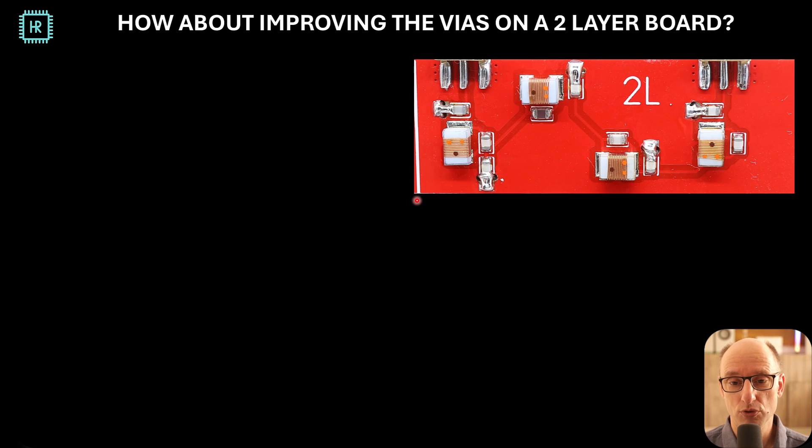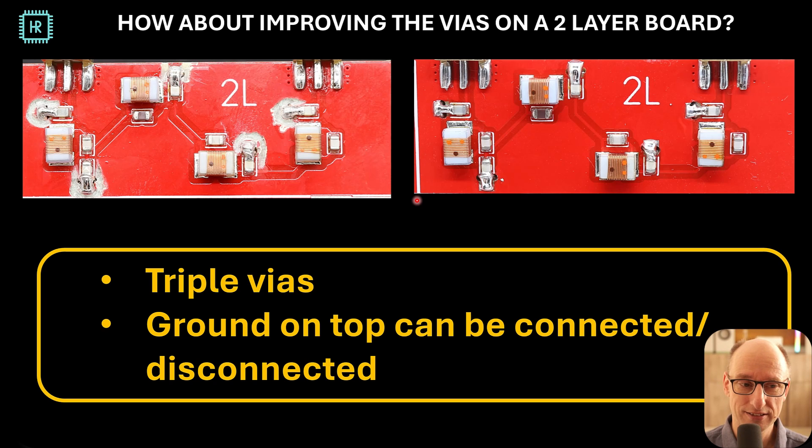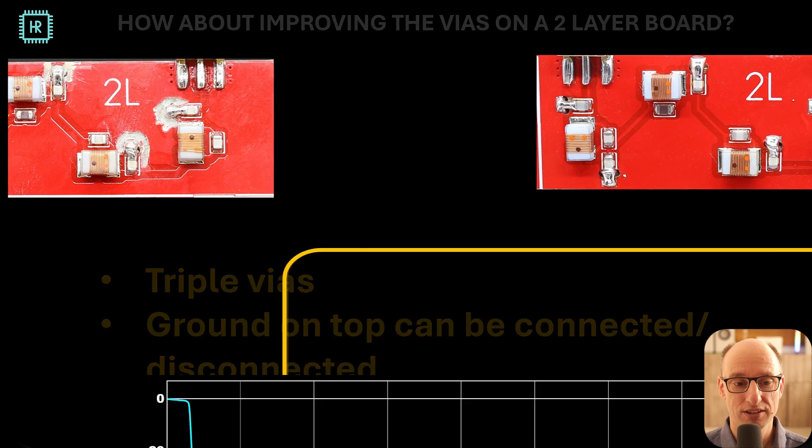I also wanted to be able to disconnect the top layer. Well, that requires some destructive measures. Because with these extra holes, they were basically in the top ground plane. So I had to use my Dremel to cut away the top ground around these things to be able to do this measurement. So I won't be able to hook this back up to the top layer again. Let's see what it does.